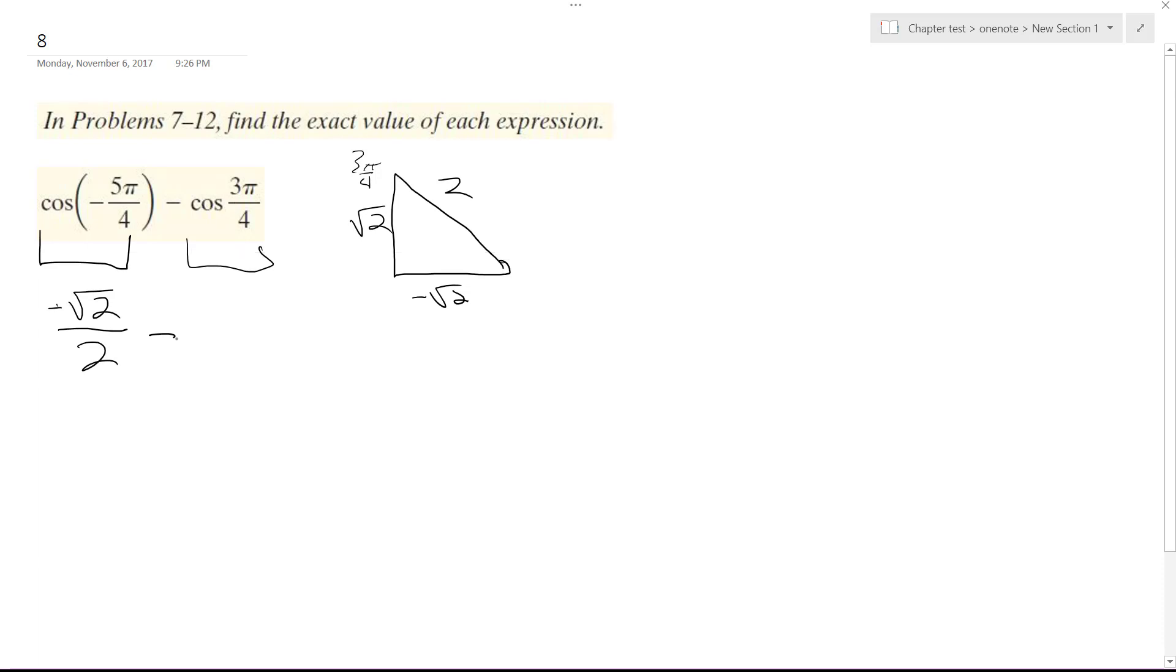Alright, so I got a negative √2 over 2. So I can combine them, so I get negative 2√2, because I'm combining both negative √2s. They have the same denominator, so I can combine them over 2. 2s cancel out, and I'm simply left with negative √2.